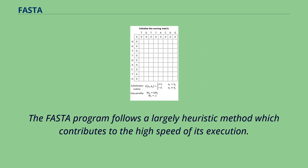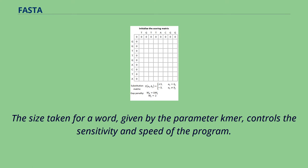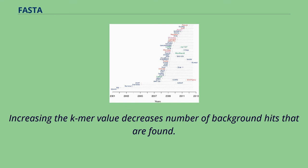The FASTA program follows a largely heuristic method which contributes to the high speed of its execution. It initially observes the pattern of word hits — word-to-word matches of a given length — and marks potential matches before performing a more time-consuming optimized search using a Smith-Waterman type of algorithm. The size taken for a word, given by the parameter KER, controls the sensitivity and speed of the program. Increasing the KMAR value decreases the number of background hits that are found.